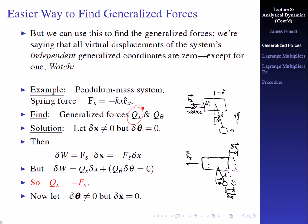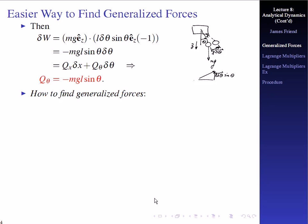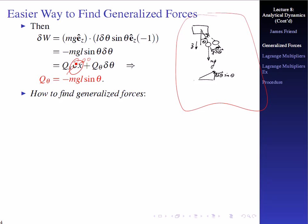Notice that we didn't use a prime here because this spring force is actually conservative, or we might treat it that way. Now let's try the other direction. If delta theta is not equal to zero and delta x equals zero, then delta W equals mg e_z · l delta theta sin theta e_z, which equals minus mg l sin theta times delta theta. Since delta x is zero, we get Q_theta times delta theta = minus mg l sin theta times delta theta, giving Q_theta = minus mg l sin theta as our generalized force.